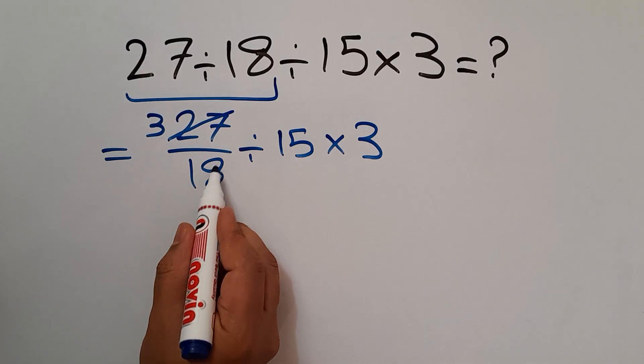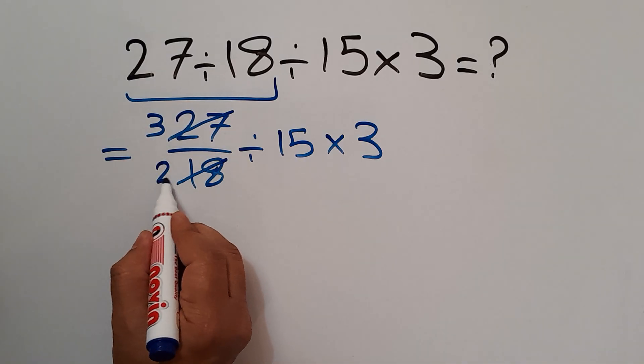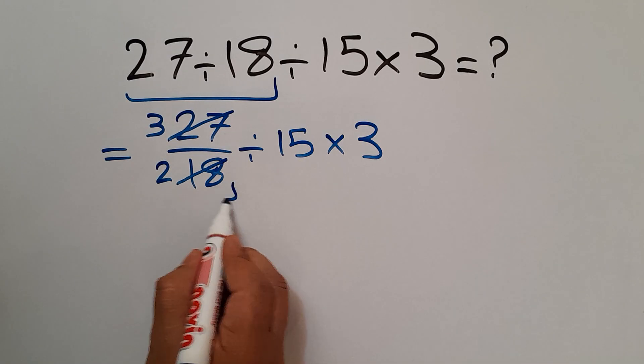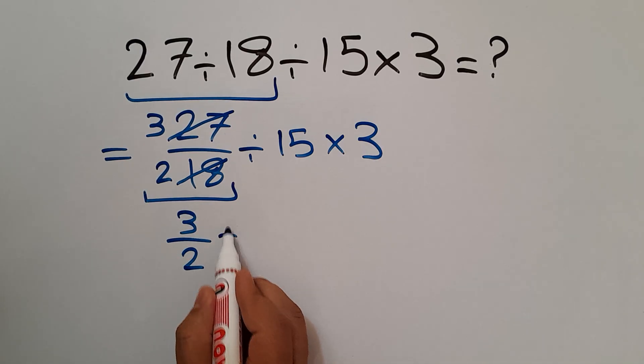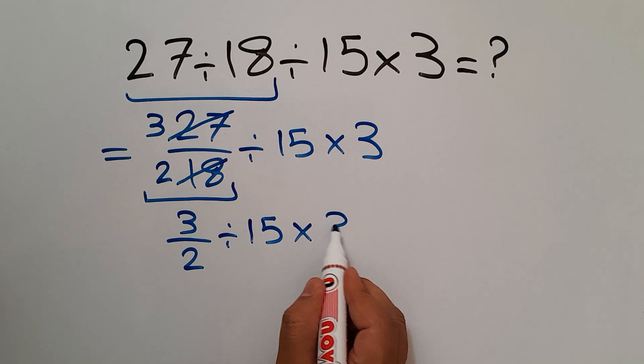And 18 divided by 9 gives us 2. So we have 3 over 2 divided by 15 then times 3.